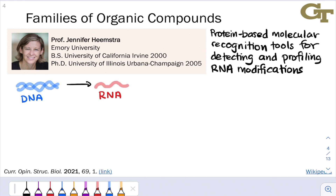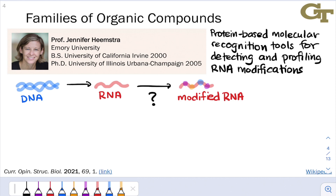But there's more to this story. RNA often undergoes chemical changes to residues along the nucleic acid chain before it gets translated — producing what we might call modified RNA. The goal of the Heemstra group and others cited in this paper is to recognize, better understand, and track those RNA modifications using chemical and protein-based tools.